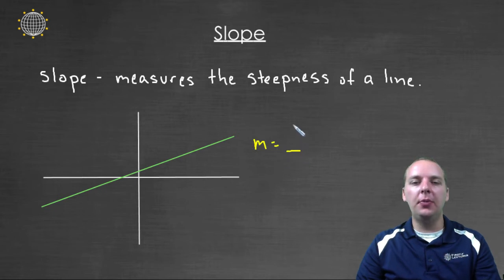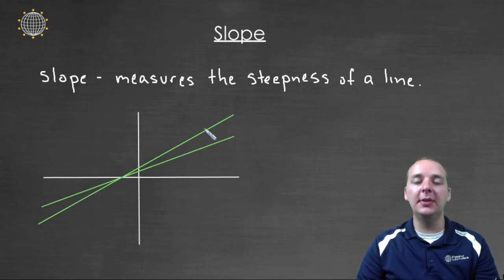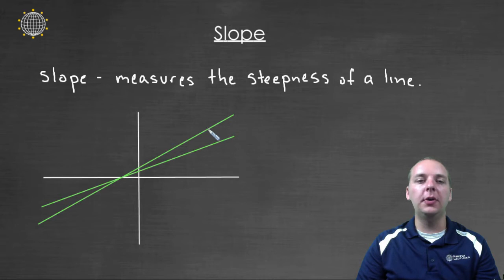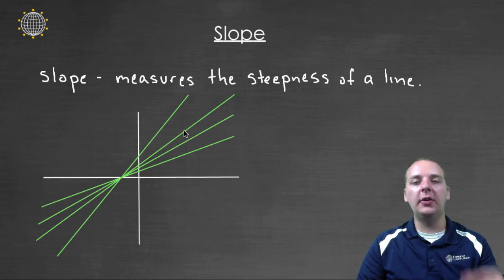This number is going to represent how steep that line is. So like this line would have a particular slope, and if you compare that to this line's slope, the second line I just drew, its slope would be a little larger because it's a little steeper. The third line would be even a little larger, and the fourth line would have an even larger slope.